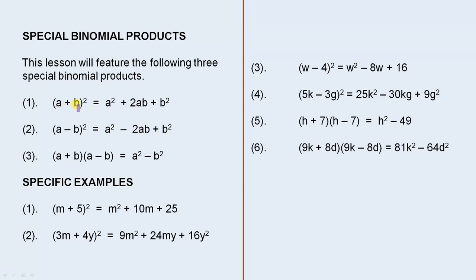The first one is when you have two terms a and b and you square it. It's called binomial because there are two terms. Because they're squared, that gives you the product when it's in that particular setup.